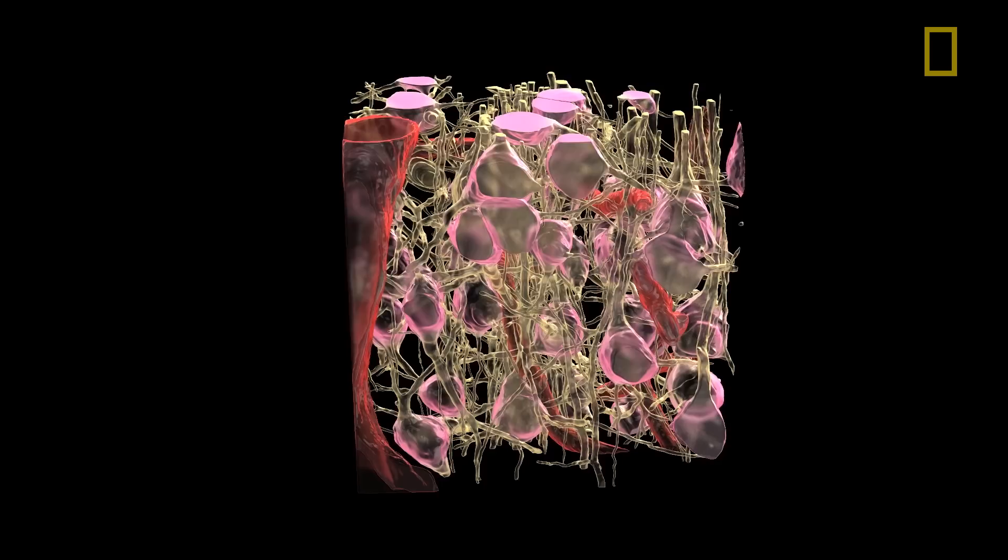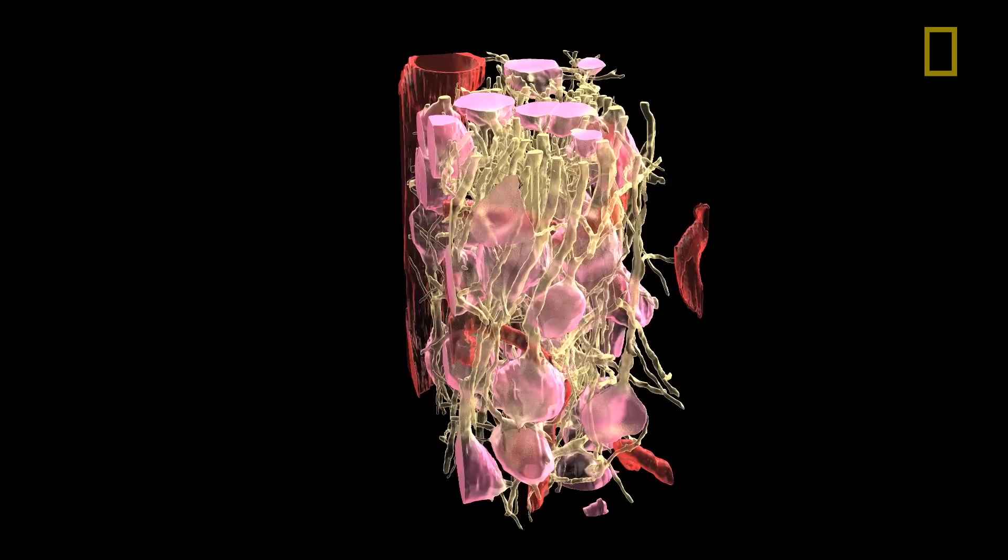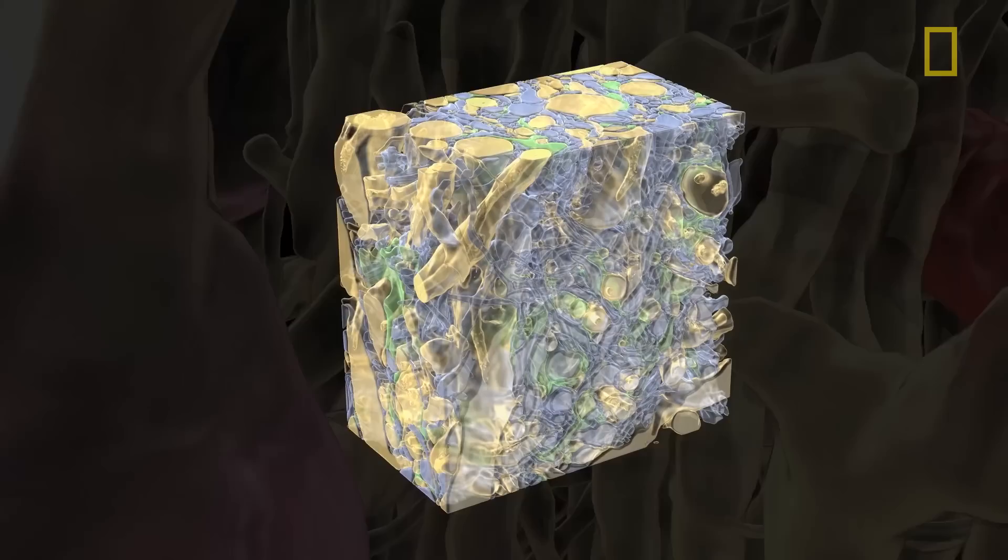And then a bunch of other things, these yellowish objects, are the processes that come off of nerve cells called dendrites. These are the antennas of nerve cells that receive information.